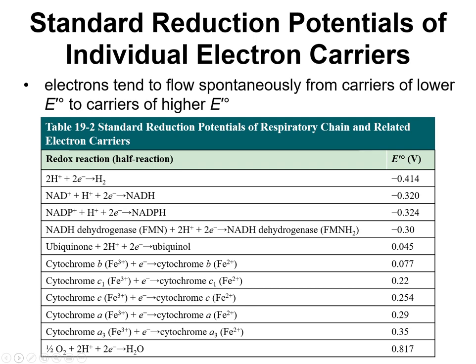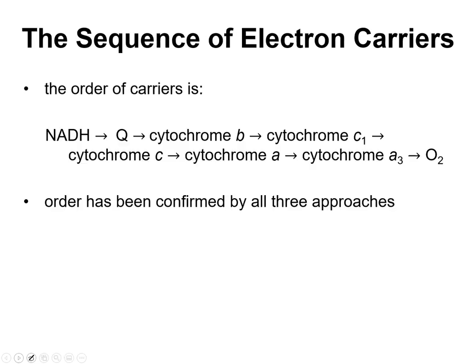This table has all the standard reduction potentials of the different parts of the respiratory chain. You don't need to know this table, but understand that electrons will flow spontaneously from carriers of lower reduction potential to higher reduction potential. The order of carriers starts with NADH, then transfers to Q, and so on. This order has been confirmed by multiple experimental approaches. I'm not requiring you to know the specific methodology and nitty-gritty details of each experiment — just understand the logic.